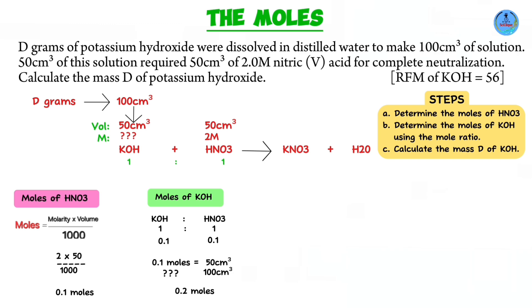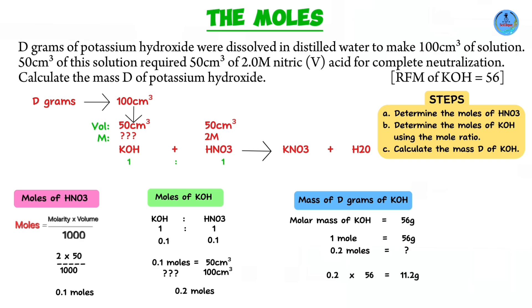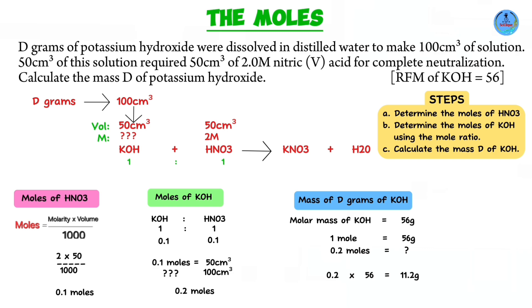We are now ready for our last step: calculating the mass D of potassium hydroxide. The molar mass is 56, from the RFM provided. One mole of potassium hydroxide has a mass of 56 grams. We have 0.2 moles, so 0.2 multiplied by 56 gives us a mass of 11.2 grams. This was the mass of potassium hydroxide that was dissolved initially to form the 100 cubic centimeters of solution.